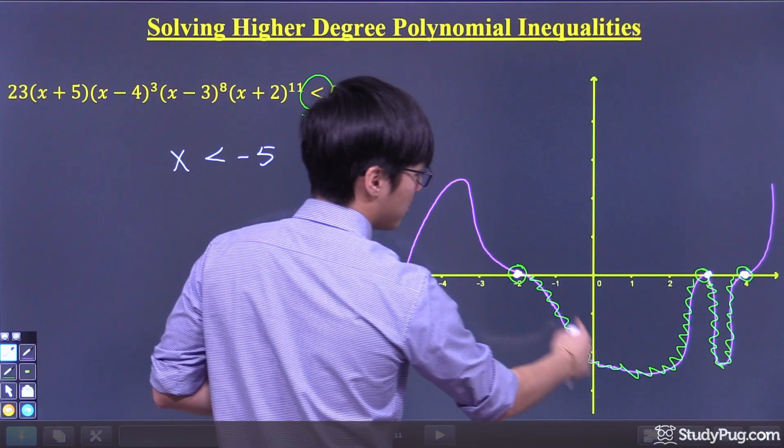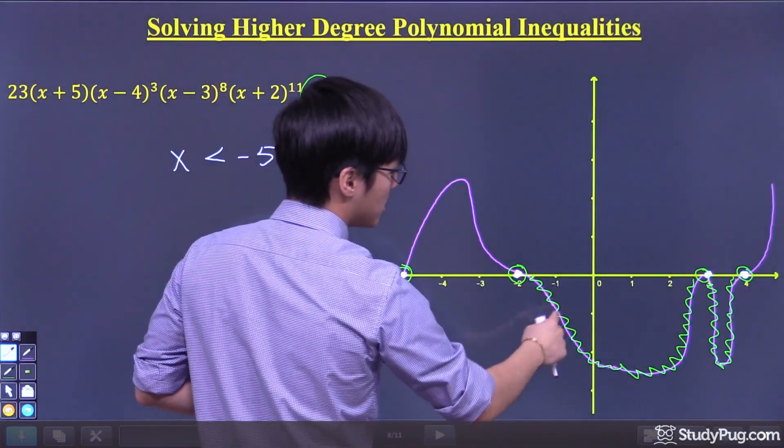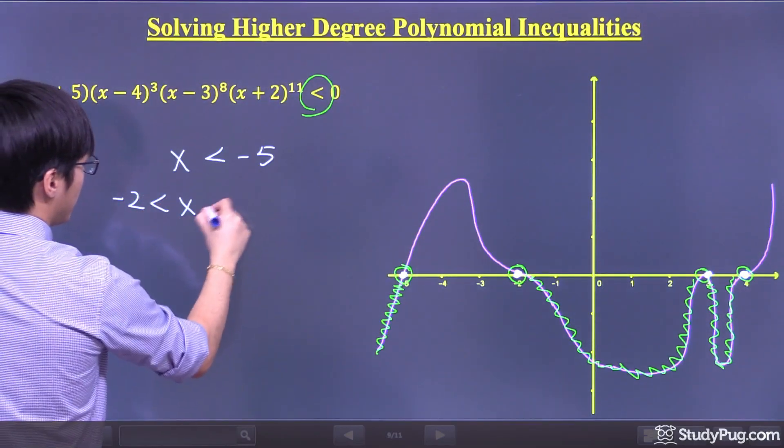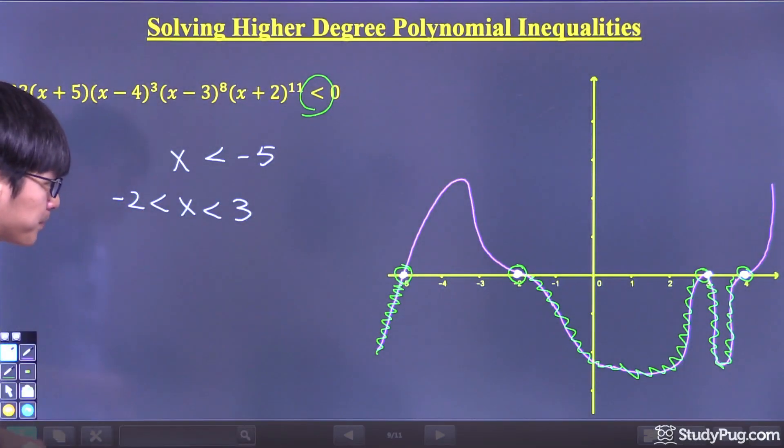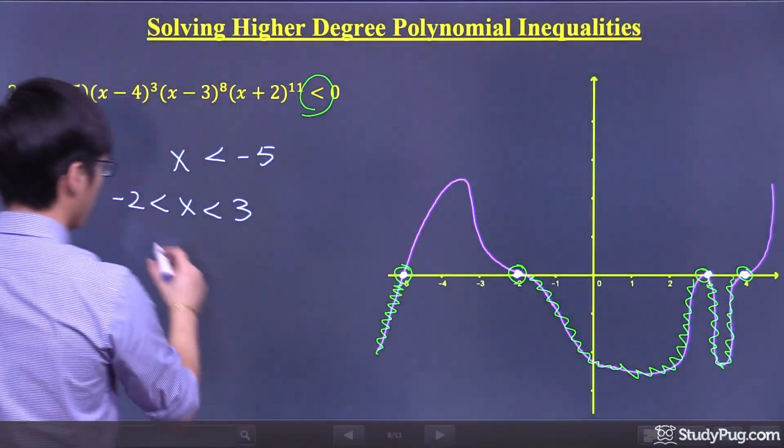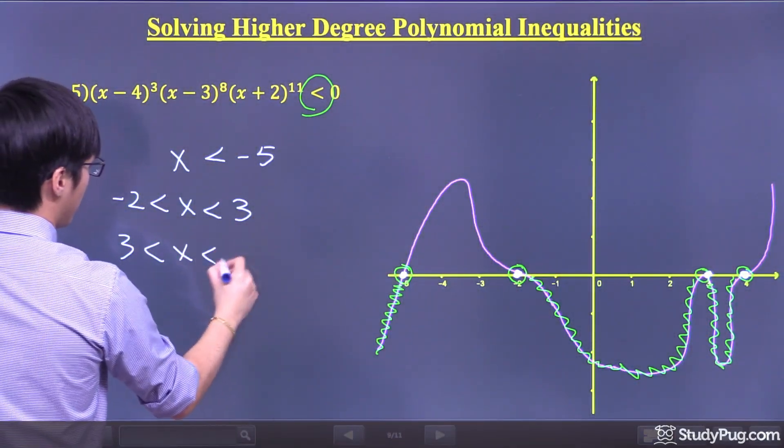Next region, we have this region over here. This region is in between negative two and three. So we have negative two and three. And last region, we have three and four.